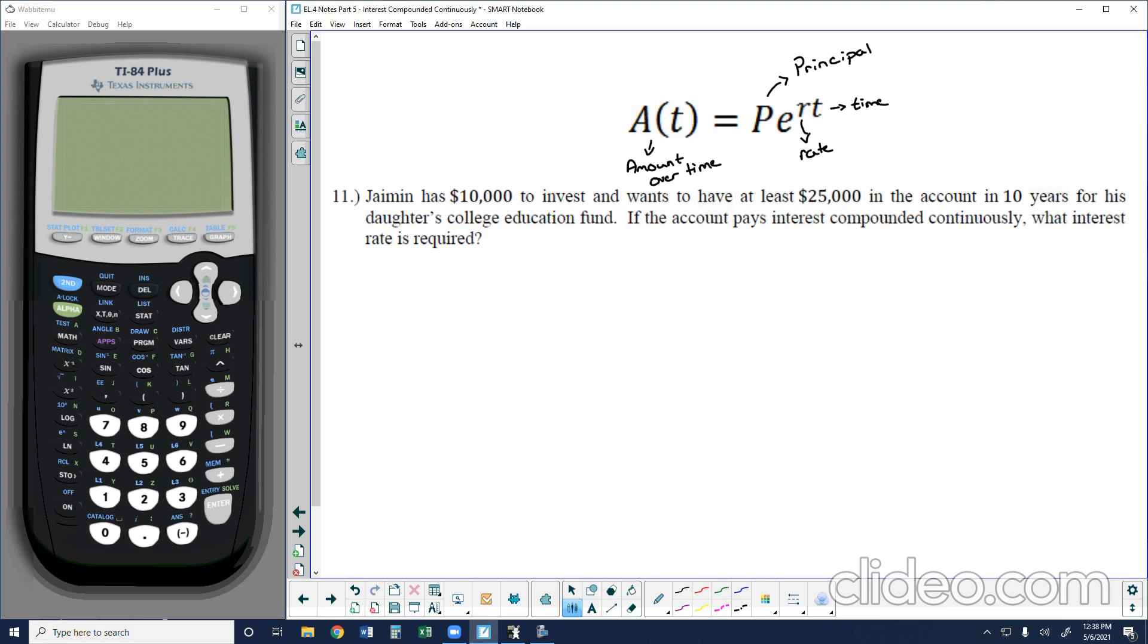Let's jump right into an example. In example 11, it says Yamin has $10,000 to invest and wants to have at least $25,000 in the account in 10 years for his daughter's college education fund. If the account pays interest compounded continuously, what interest rate is required? We know that he wants to have $25,000, so let's let the amount over time be represented by that $25,000. The principal, the initial amount that he's going to input, is $10,000. So there's the amount that we want to get to. This is the amount that we have.